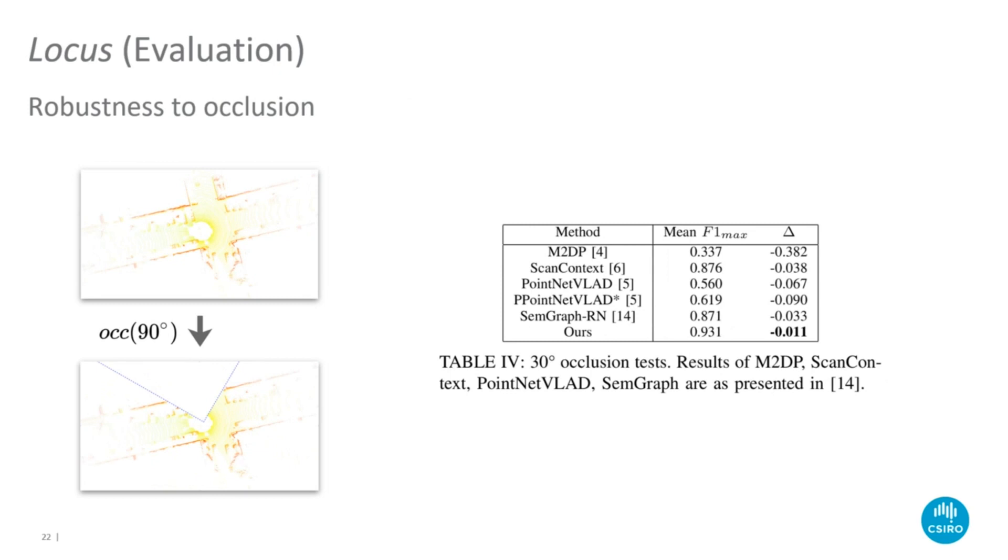This test aims to simulate occlusion of the LIDAR where the field of view of the sensor can be greatly reduced due to nearby dynamic objects or self-occlusion. We simulate sensor occlusion by removing all points which lie within a fixed sector about a randomly selected azimuth. For occlusions of 30 degrees, our method shows the lowest drop in performance.